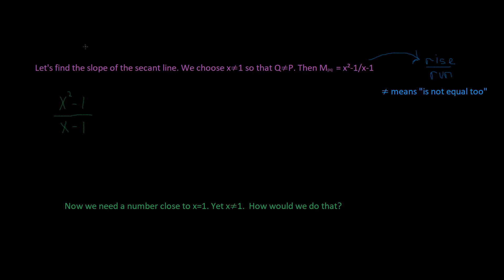Let's find the slope of the secant line. We choose x is not equal to 1 so that Q is not equal to P. Then M_PQ, which means the slope of P and Q, equals x squared minus 1 divided by x minus 1. This sign means it's not equal to, and we're trying to find the rise over the run.